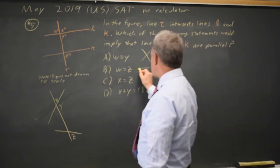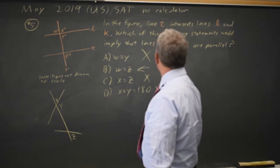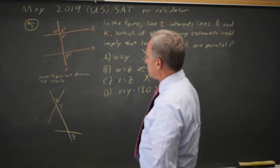By the process of elimination, I know that B must be proof that L and K are parallel. Let's see why.